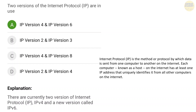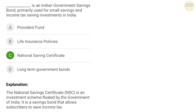Next question: which are the two versions of the Internet Protocol? The correct answer is IP Internet Protocol version 4 and Internet Protocol version 6. Internet Protocol is the method or protocol by which data is sent from one computer to another computer on the internet.